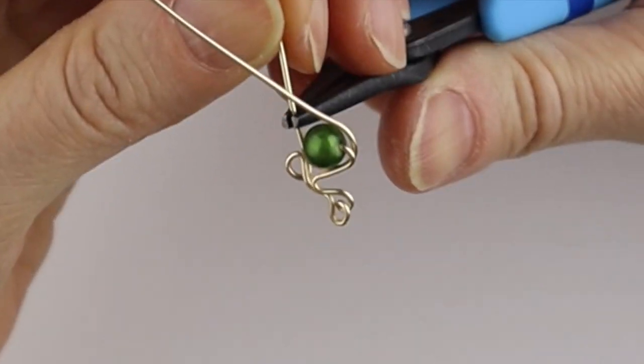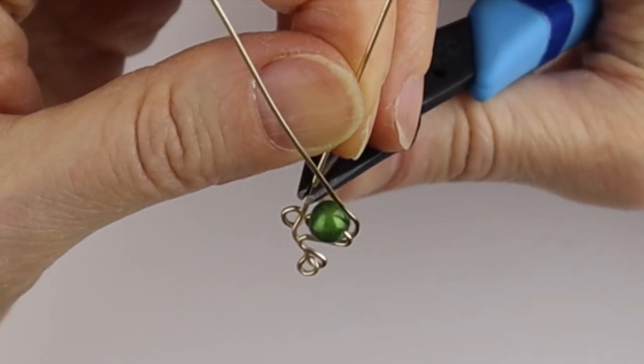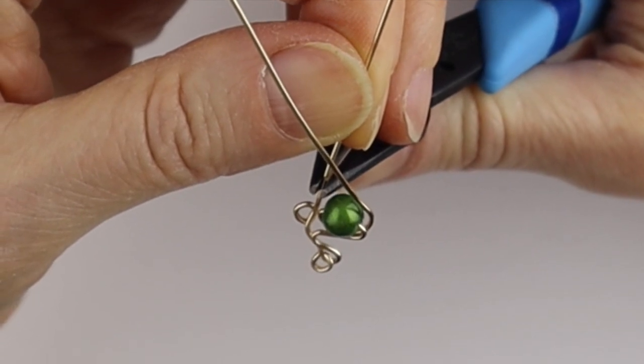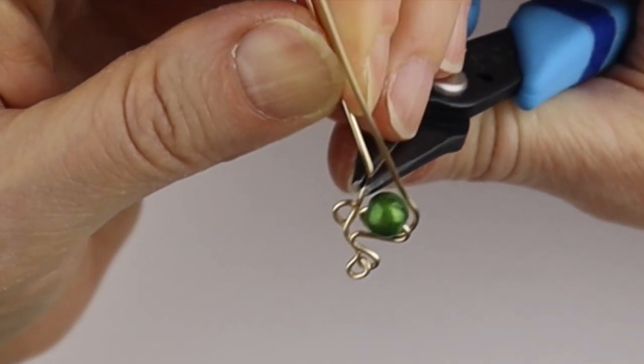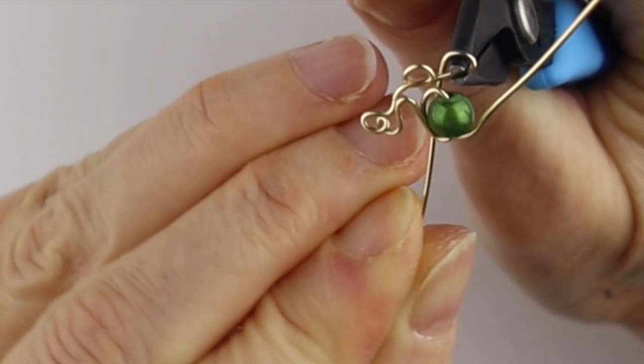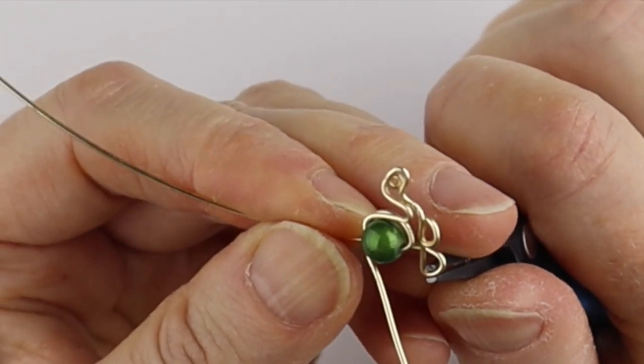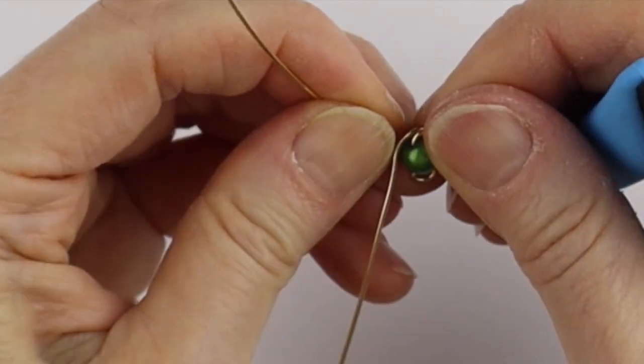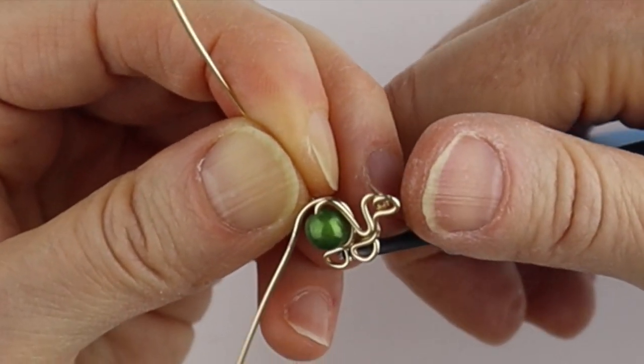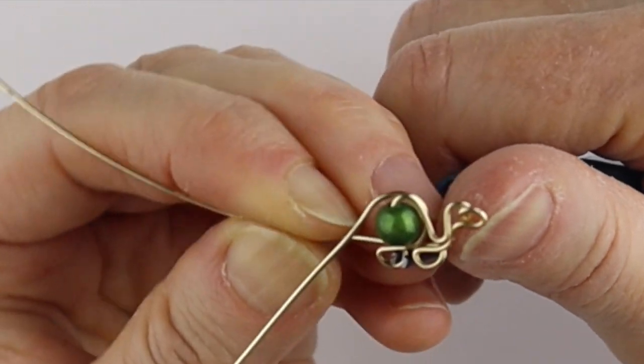Same thing, get your chain nose pliers, hold them in place where you want the other foot to be. Make sure the bead is centered underneath there and bring it around to form the other foot. You can pull it in a little bit more if you need to.